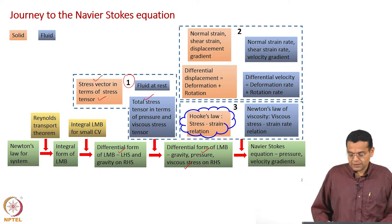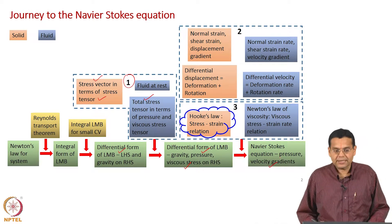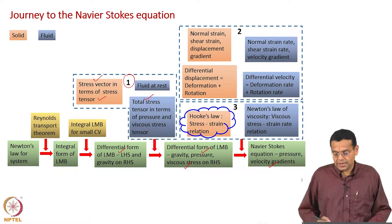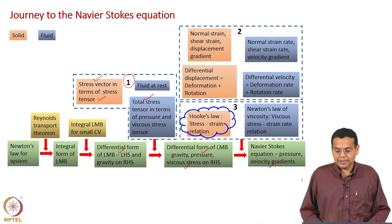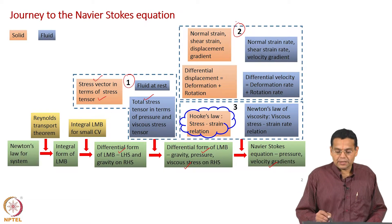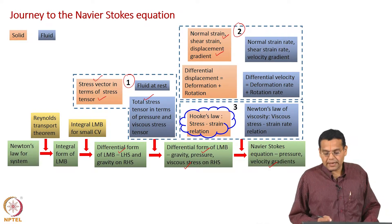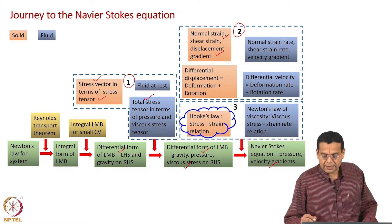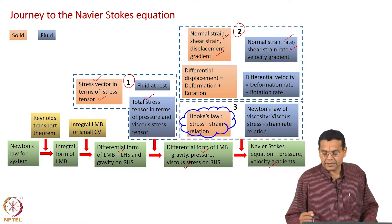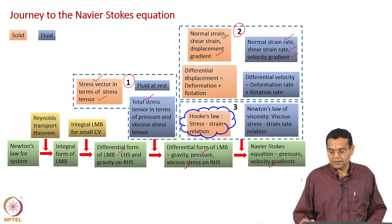Those viscous stress terms had to be expressed in terms of velocity gradients — that is where we discussed closure. To understand velocity gradients we needed to understand displacement gradients. So we made a second visit to solid mechanics, understood strain, displacement gradients, and the strain tensors, then extended that knowledge to fluid mechanics: normal strain rate, shear strain rate, velocity gradient, and the strain rate tensor.